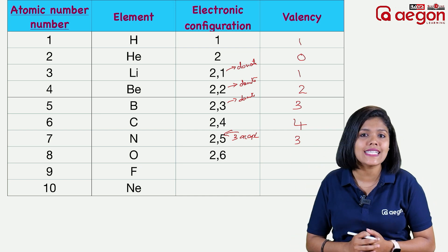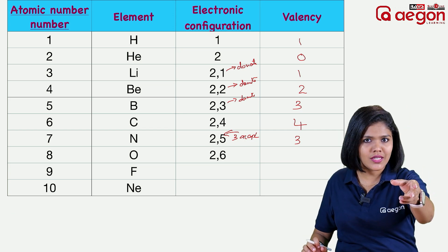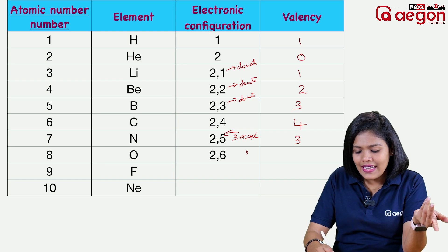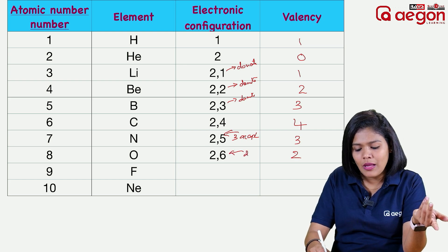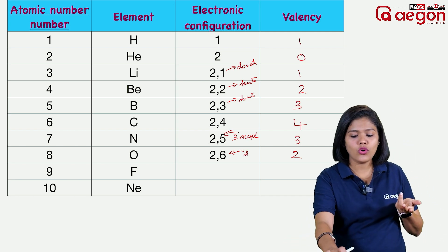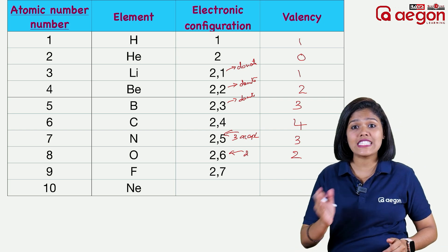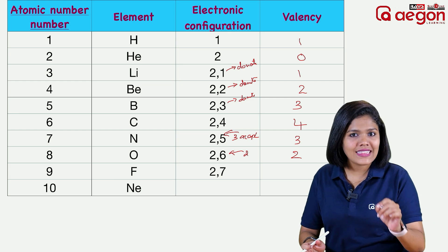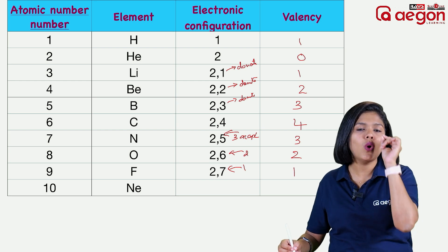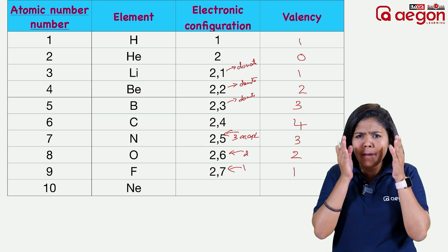Oxygen has electronic configuration 2, 6 and atomic number 8. Since there are 6 electrons in the outer shell, oxygen needs 2 more electrons to complete the shell, so the valency is 2. Atomic number 9 is fluorine — electronic configuration 2, 7. Fluorine needs only 1 electron to balance, so the valency is 1.